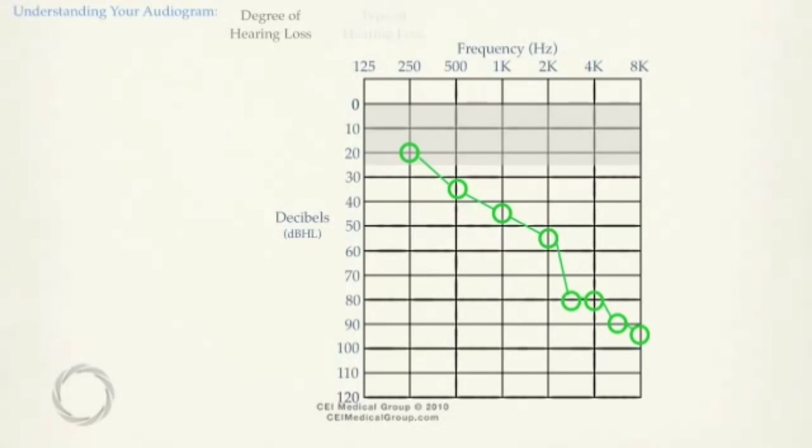Once hearing acuity is measured for each frequency, the degree of hearing loss is known. Normal hearing is anything at or above 25 decibels. A mild hearing loss ranges from 30 to 35 dB. A moderate hearing loss is from 40 to 65 dB. A severe hearing loss is from 70 to 90 dB, and a profound hearing loss is recorded at anything at or below 90 dB.